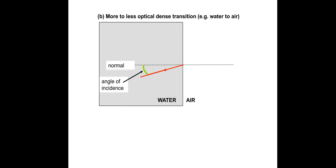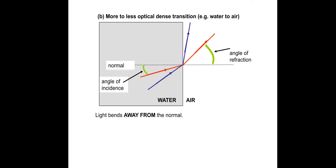The other way around: if we go from a more dense medium to a less dense medium, you get the opposite — the light would refract away from the normal. Light bends away from the normal and the angle of refraction is greater than the angle of incidence. So to reiterate: when we go less dense to more dense the angle of refraction is smaller, and when we go more dense to less dense the angle of refraction is greater than the angle of incidence.